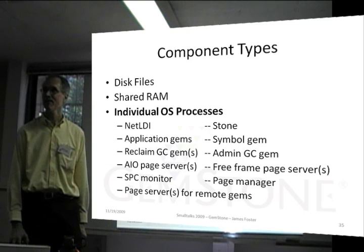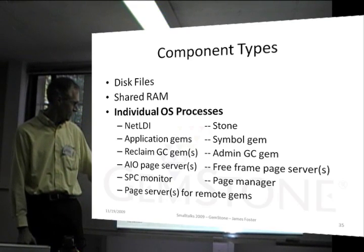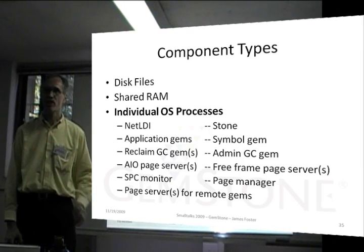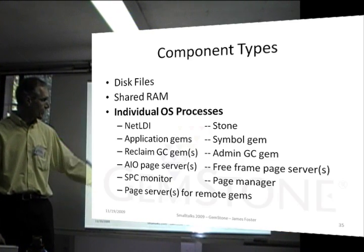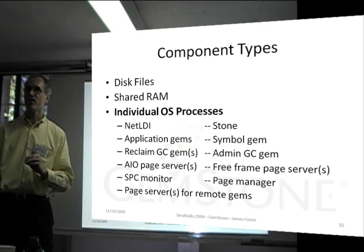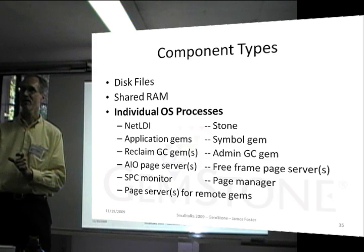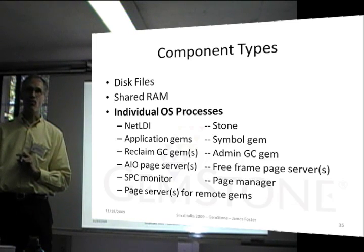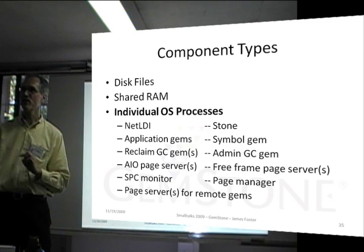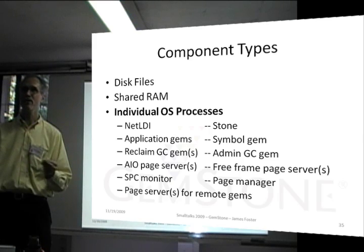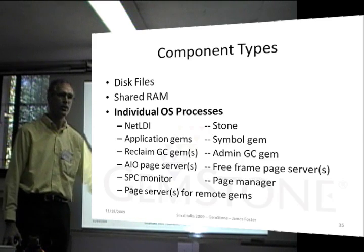The shared page cache monitor watches the shared page cache, makes sure it's up and running, and coordinates its usage. The stone itself. Symbol gem: in Smalltalk, symbols are strings that are unique and canonical — all symbols with the same characters point to one object. That works reasonably in traditional Smalltalks with only one virtual machine, but in GemStone we need to coordinate the creation of symbols because two sessions might want a new symbol at the same time. So all new symbols are created by a symbol gem.